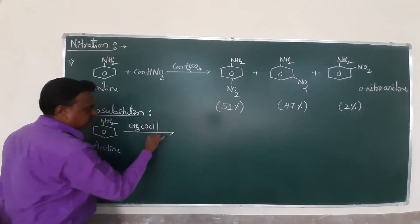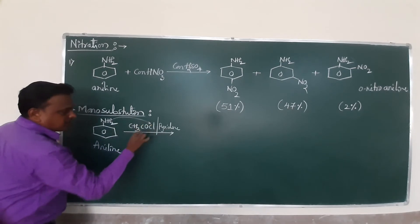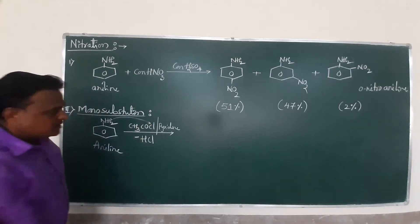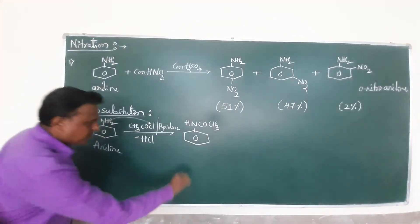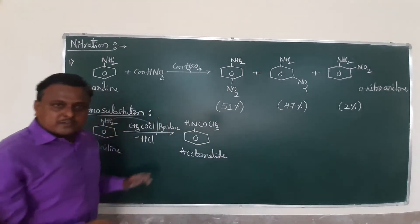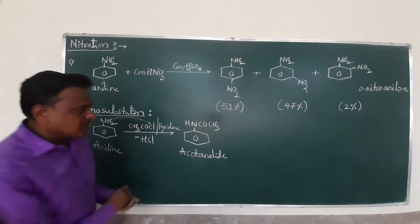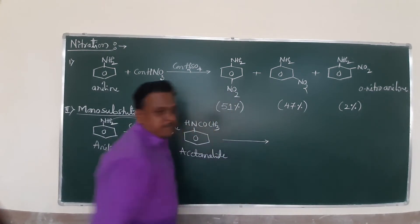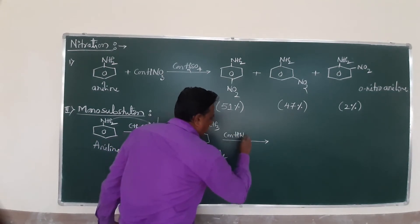It undergoes reaction with acetic anhydride. In the presence of pyridine, this H is combined with the release of hydrochloric acid to form the product is NHCOCH3. Your name of this component is acetanilide. What is another name of acetanilide? You know already, N-phenyl ethylamide. So acetanilide. And this acetanilide undergoes nitration.